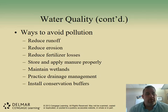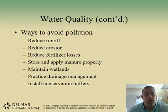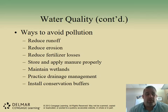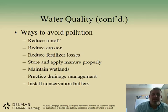Key ways to avoid over-polluting water include: reducing runoff and erosion, reducing fertilizer losses that leave a property, storing and applying manure properly, maintaining wetlands and not allowing them to dry, practicing drainage management, and installing conservation buffers. All of these help maintain water quality by ensuring water goes where we want it, doesn't pick up unwanted materials, and stays where it should be.